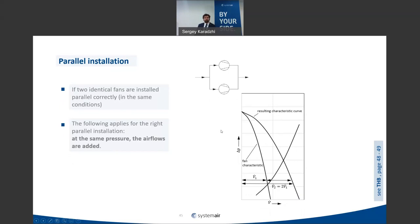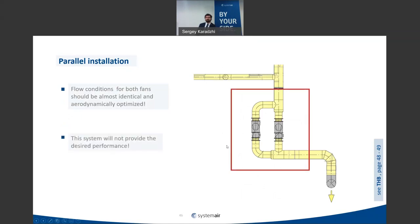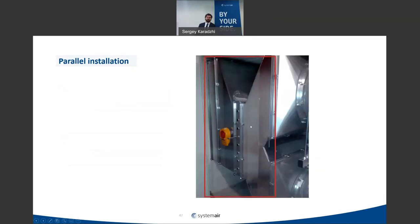An example of bad parallel installation shows two fans installed in different conditions — of course, you will not achieve the expected combined airflow. Series installation is used to increase pressure — theoretically doubling it if both fans are identical and have good inlet conditions. But if both fans have very bad inlet and outlet conditions, as shown in the example, you will never achieve twice the pressure.